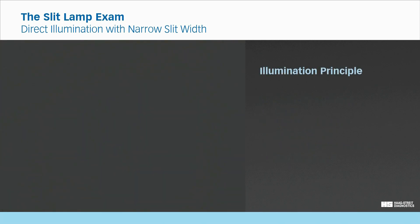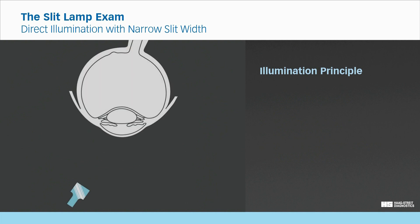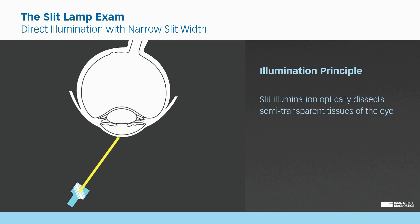Illumination principle. Direct illumination with a narrow slit width is a technique that allows the light to optically dissect the semi-transparent media of the eye. In this technique, the light beam acts like a knife which cuts through the different layers of semi-transparent tissues and allows the examiner to observe and accurately locate the structures and alterations.